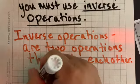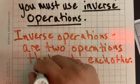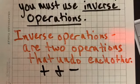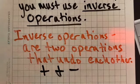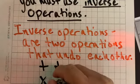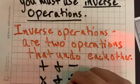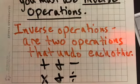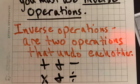For example, addition and subtraction are inverse operations of each other. Multiplying and dividing are inverse operations of each other. These are the key ones you're going to need to always want to know. Which ones are the inverse operations?